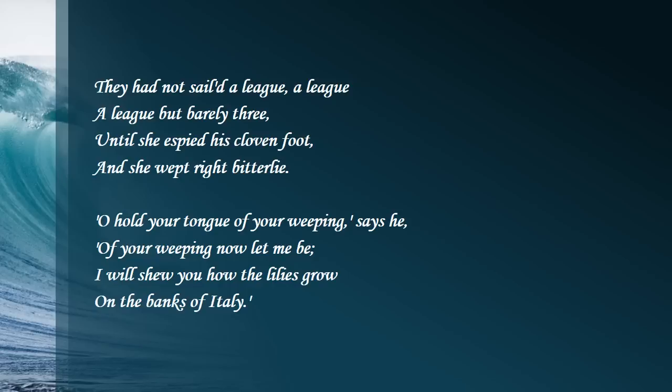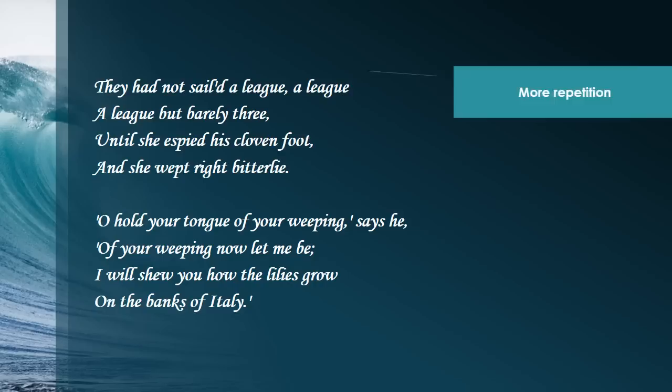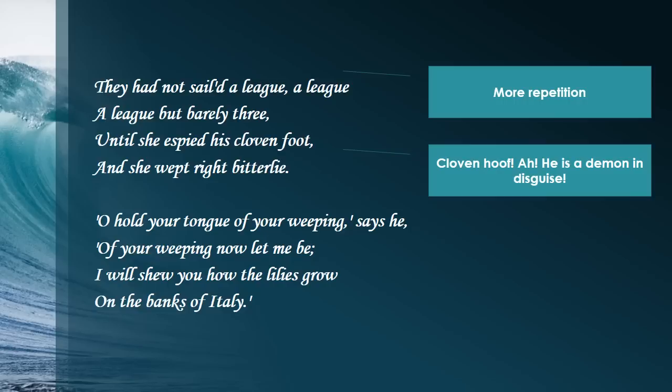Again, here's that repetition: 'They had not sailed a league, a league, a league, but barely three, until she espied his cloven foot, and she wept right bitterly.' The cloven hoof, of course, goes along with the devil, a demon. So here we see his disguise falling away and she's starting to see that she made a mistake. She's weeping bitterly.